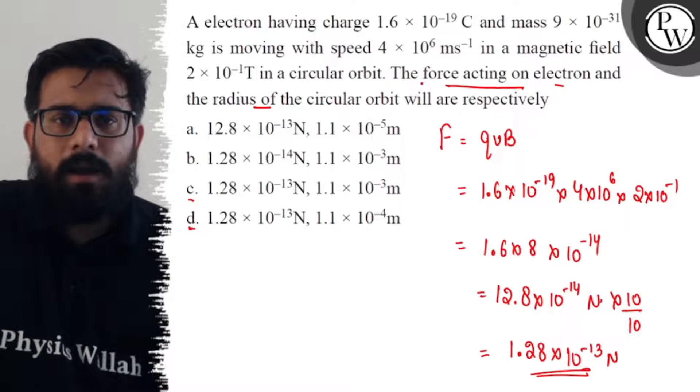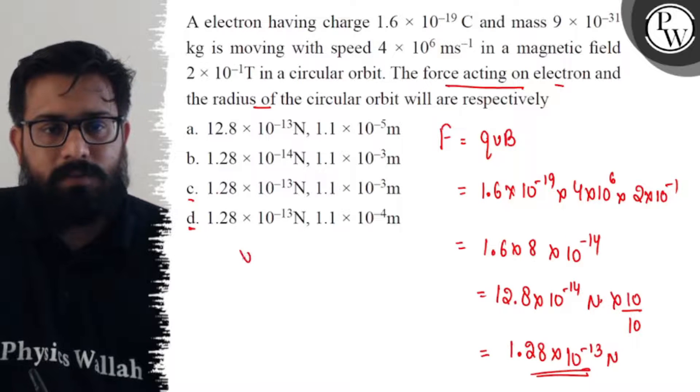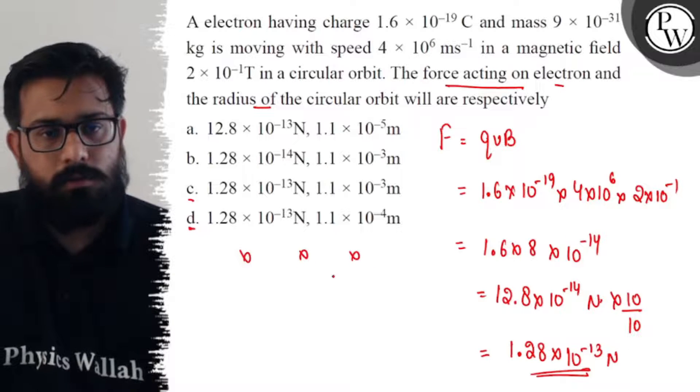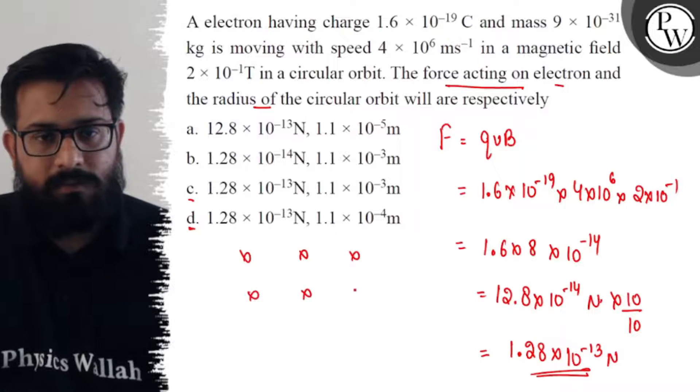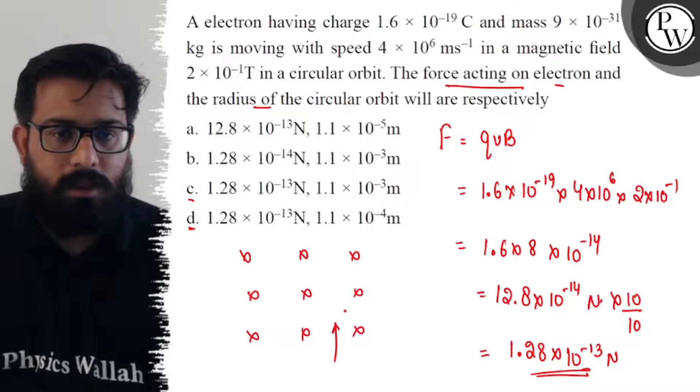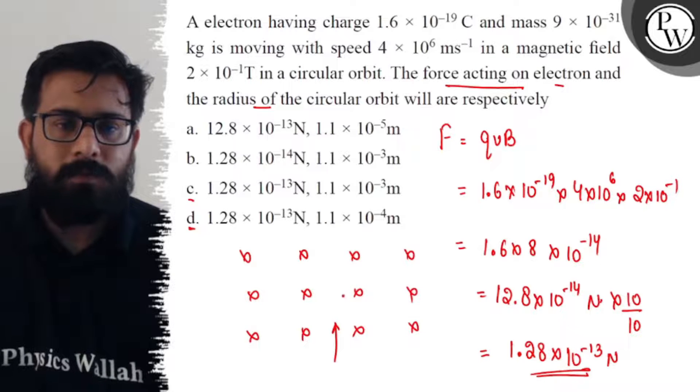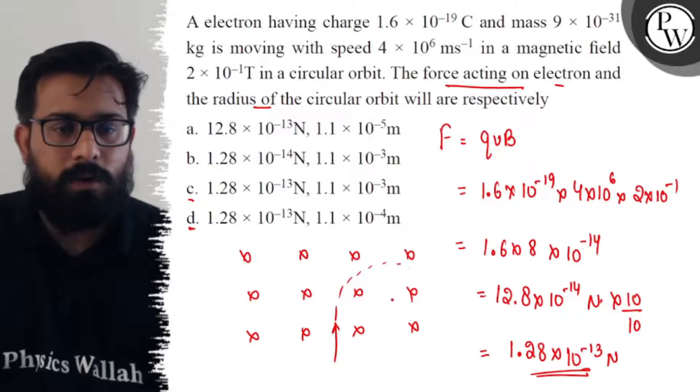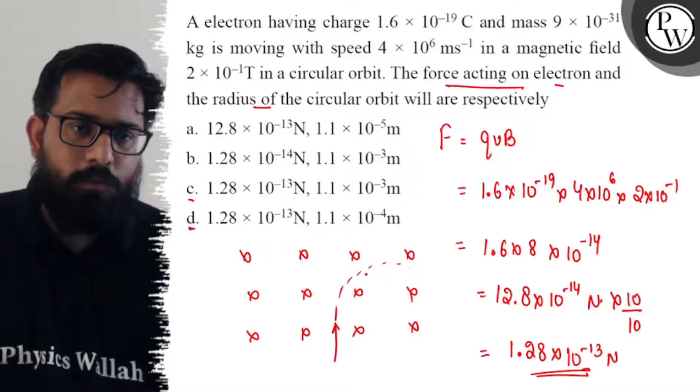Now if we talk about radius, so we have this magnetic field, and when the electron enters this magnetic field, it will move in a circular path. It will follow this circular path.